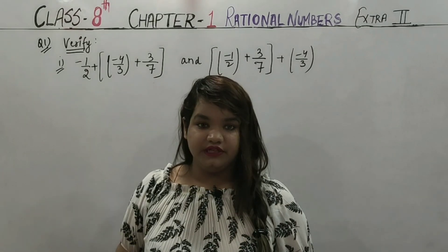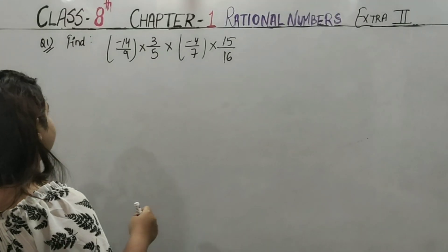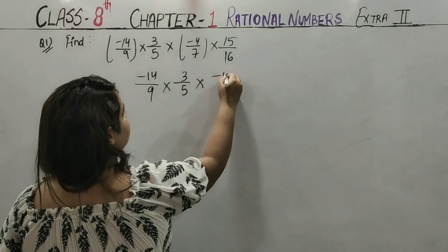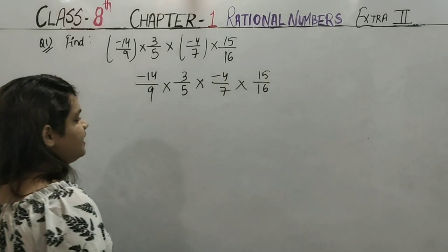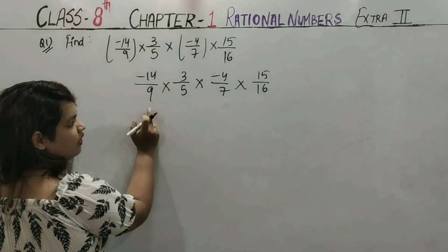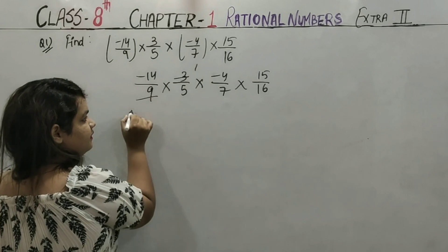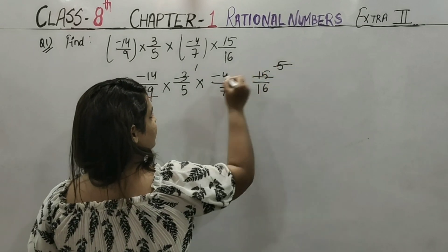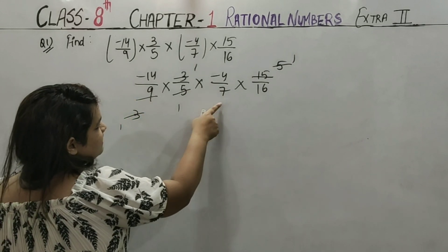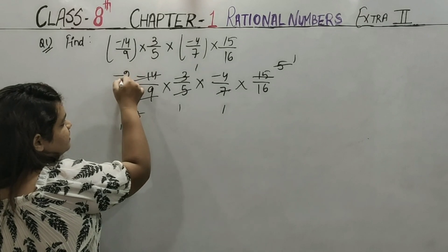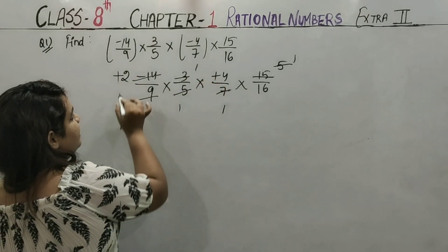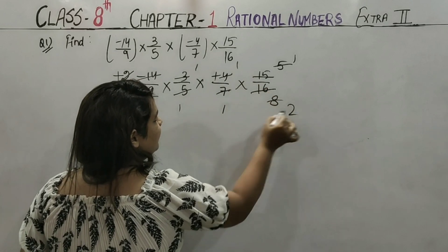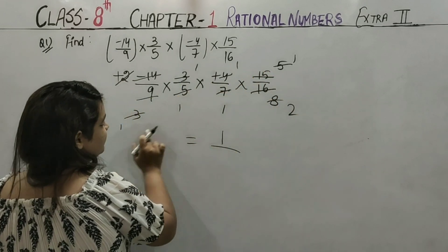There are very important questions in this video. Let's do Question No. 1 — we have to find its value. First, let's open the bracket: (−4/9) × (3/5) × (−4/7) × (15/16). Now simplify: 3 and 9 cancel (3 from 9 gives 3), 3 from 15 gives 5, 5 and 5 cancel, 7 and 14 give 2, minus-minus cancels, 2 and 16 give 8, 4 and 8 give 2. Answer: 1×1×1×1 / (1×1×1×2) = 1/2.